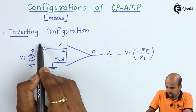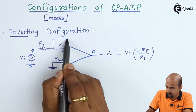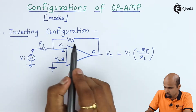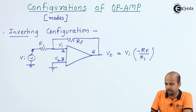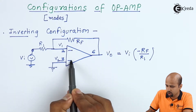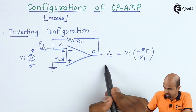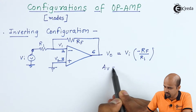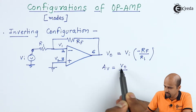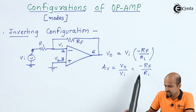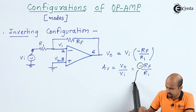Here R1 is the input resistor and Rf is the feedback resistor. We provide negative feedback through resistance Rf, and this feedback is applied back to the inverting terminal, not the non-inverting terminal — that is why we call this negative feedback. The voltage gain Av equals Vo divided by Vi, which equals minus Rf upon R1.